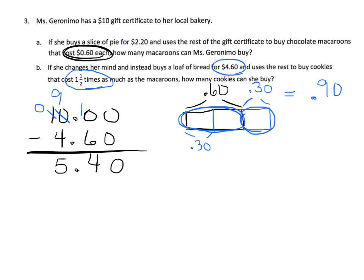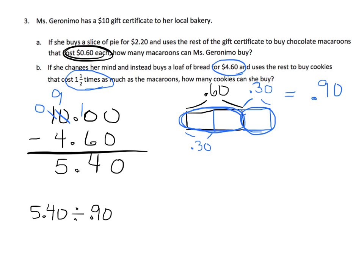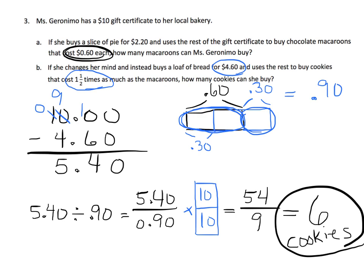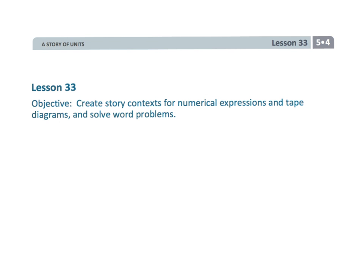So now, with the remaining $5.40, we divide by $0.90. Writing it as a fraction and multiplying both numerator and denominator by 10 — which is multiplying by 1, not changing the value — that gives me 54 over 9. I could do that division in my head: the answer is 6. So she could buy 6 cookies. And that wraps up 5th grade module 4, lesson 33, solving word problems.